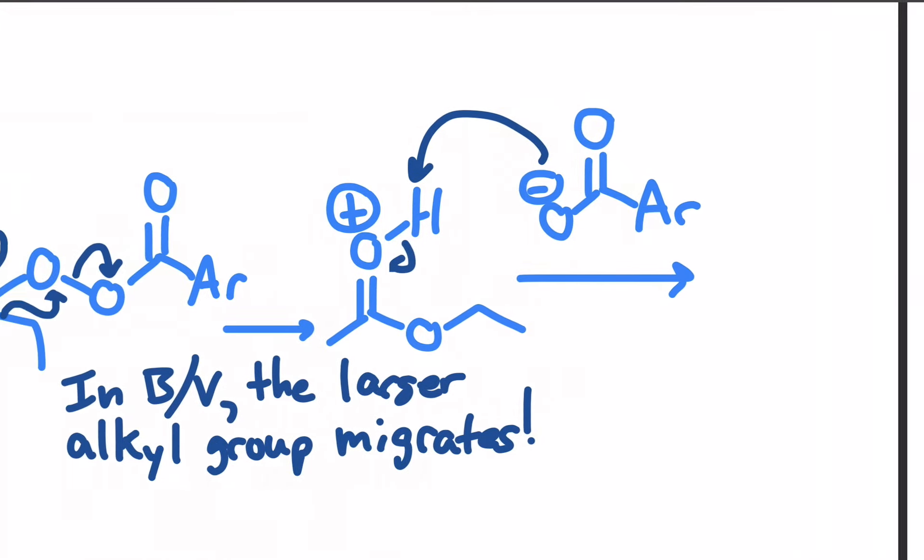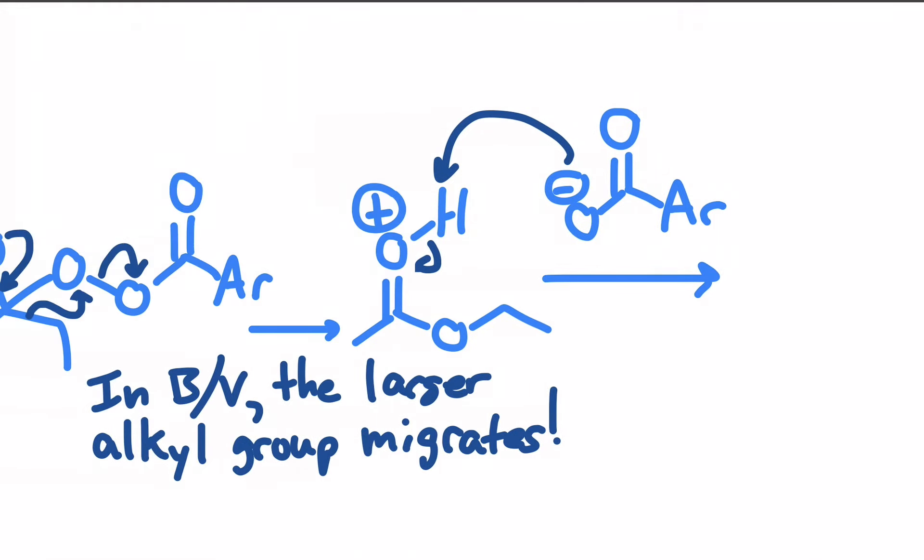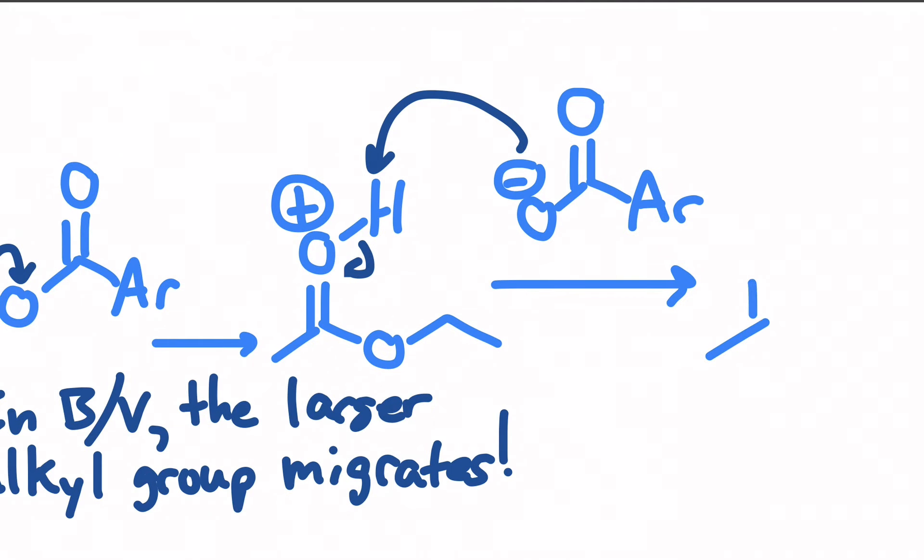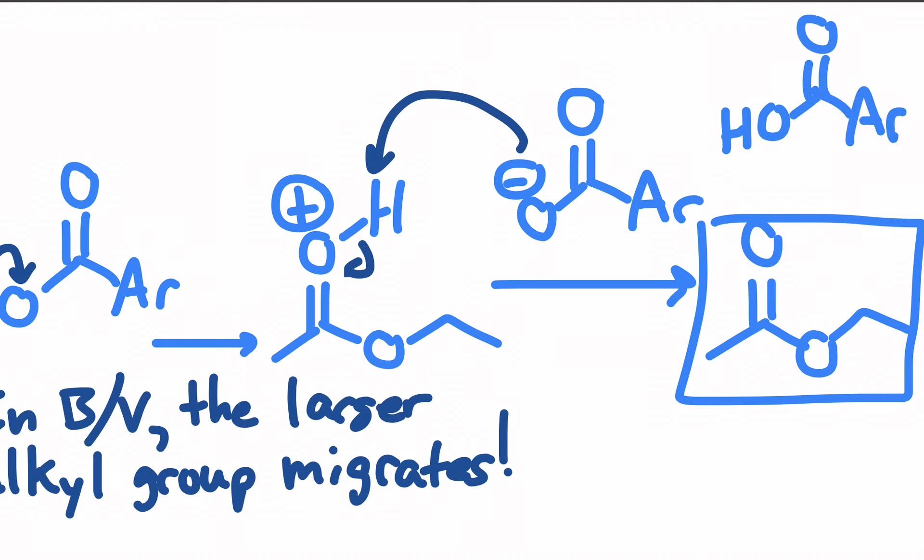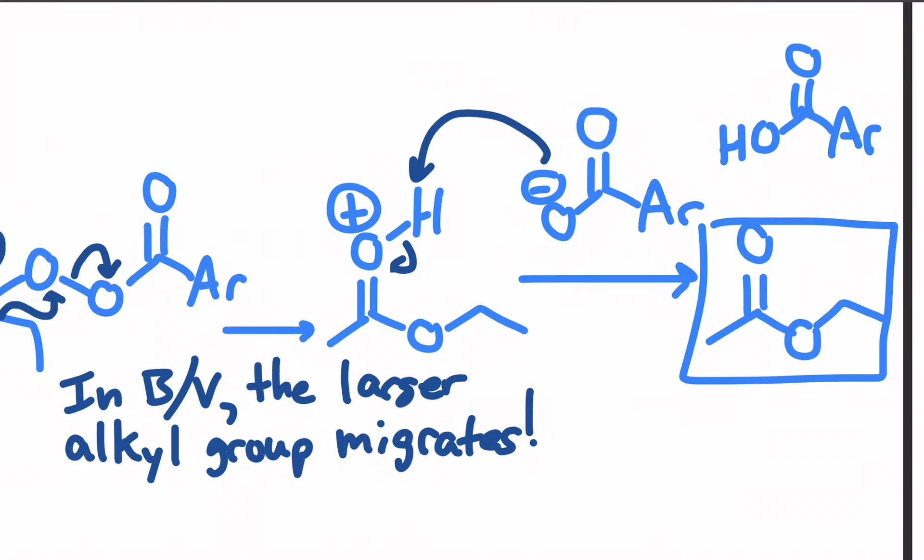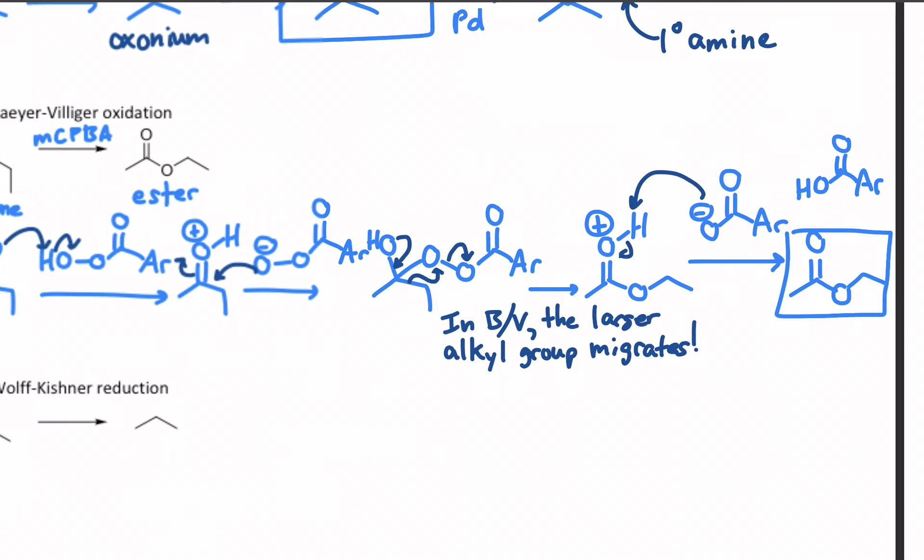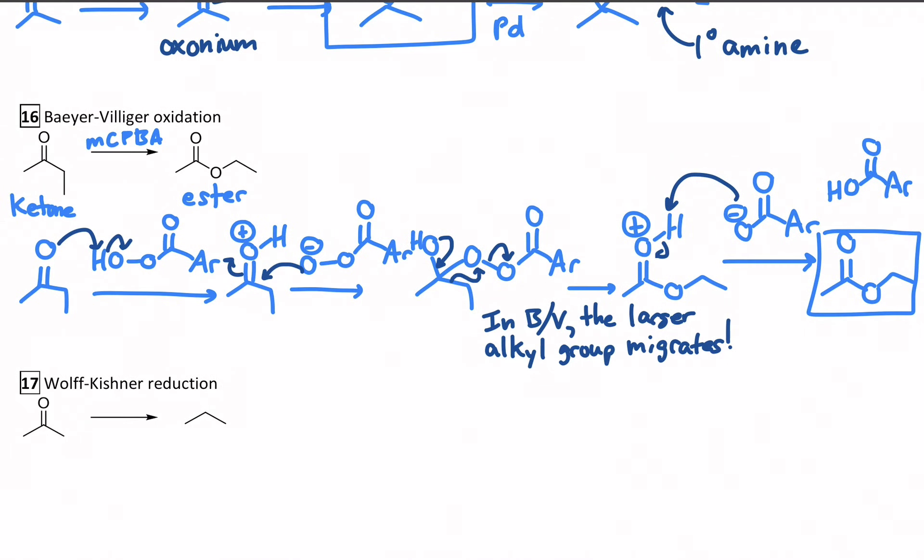And that will actually give you the ester - that's our main product - and your byproduct is just the carboxylic acid. So all that we did was deliver an oxygen from MCPBA into the ketone and turn it into an ester. Interesting mechanism which I think is why it makes for a good practice problem in this unit, and it's also the first way we have to make esters.